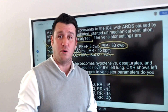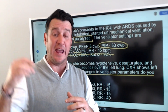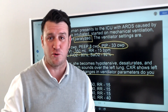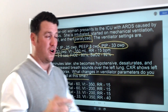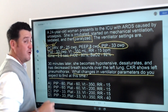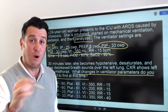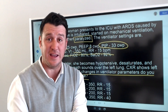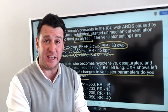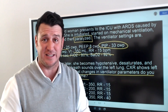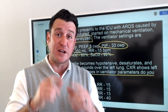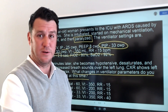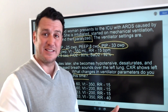In volume control, decreased compliance would cause your peak inspiratory pressures and plateau pressures to go up. But we're not in volume control — we're in pressure control. Remember, that's the key to the whole question. In pressure control, we control pressure and allow volumes to vary in response to changes in compliance and resistance. So in pressure control, when your compliance goes down, your exhaled volumes will go down. And that's the answer to this question.